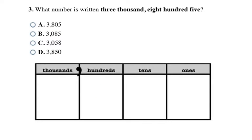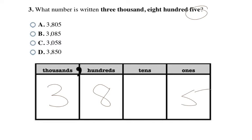Here's another question: what number is written as three thousand, eight hundred and five? Three thousand means a three in the thousands column, eight hundred means an eight in the hundreds column, and five goes in the ones column. I didn't have a tens number, so I fill it in with zero. The chart helped me see I needed to add that zero because I was missing the tens number. So three thousand eight hundred and five is my final answer, which is choice A.